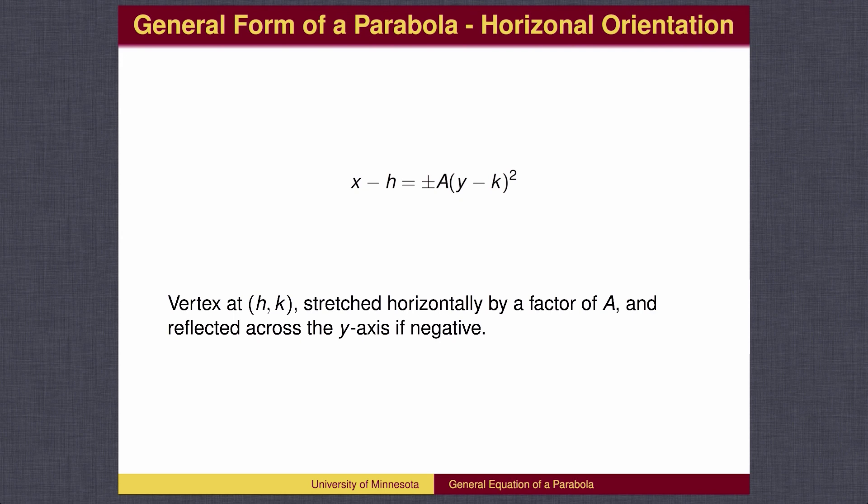A minus sign will reflect the graph horizontally, so that it now points to the left. The a will stretch the graph horizontally, making the x distances larger by a factor of a.